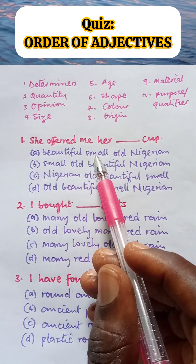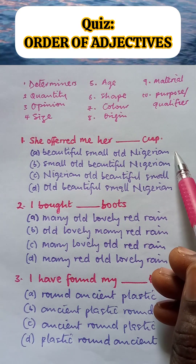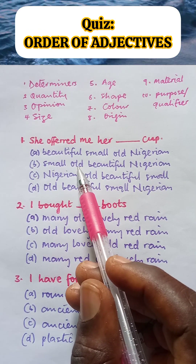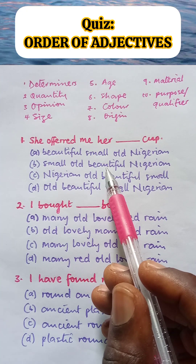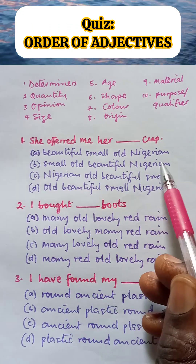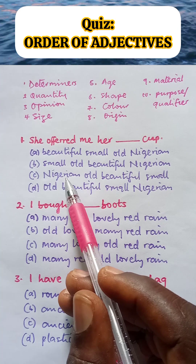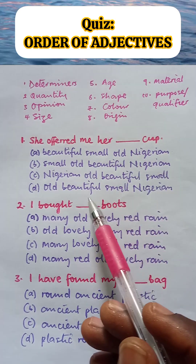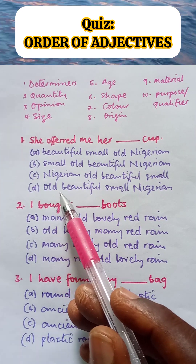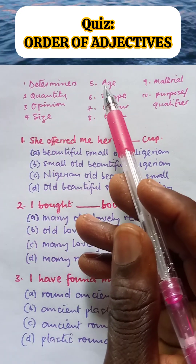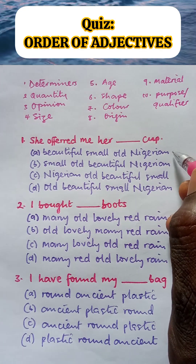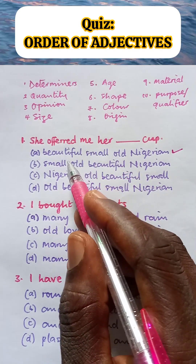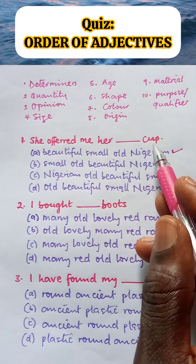Looking at the options: Option A has opinion, size, age, origin — obviously option A is correct. Option B has size, age, then opinion — no, opinion should come first, so option B is out. Option C starts with Nigerian which is origin, then old which is age — this is wrong, opinion should come first, so option C is out. Option D has age then opinion — no, opinion comes before age, so option D is out. The correct answer is option A, and the statement reads: She offered me her beautiful, small, old Nigerian cup.